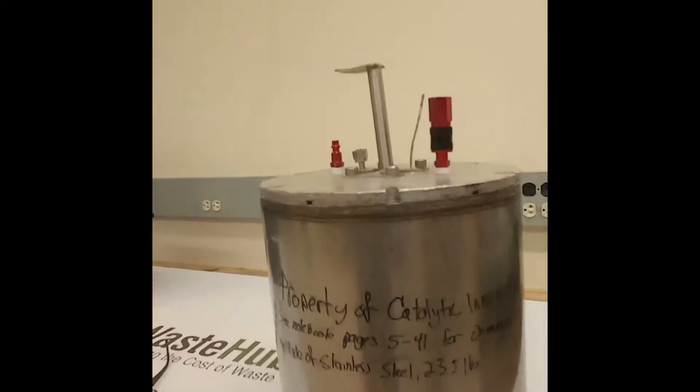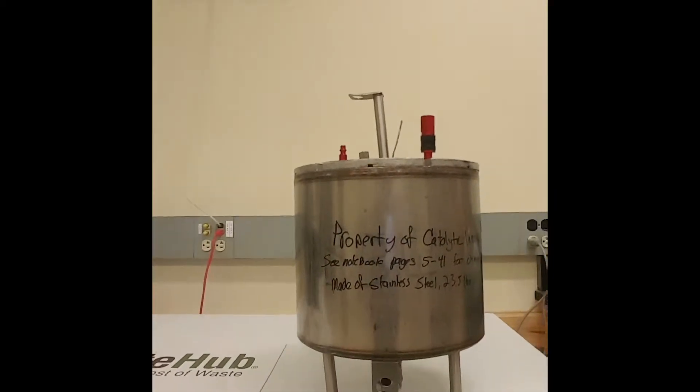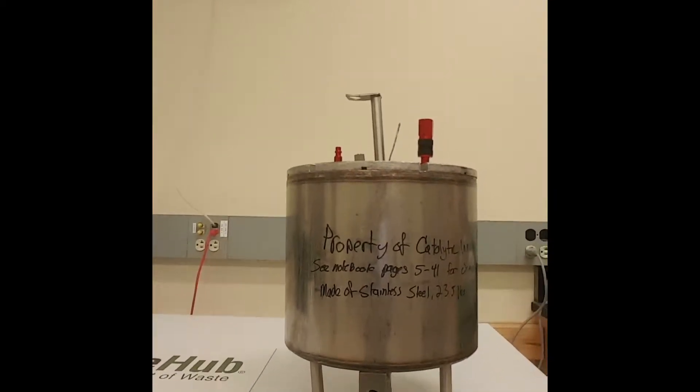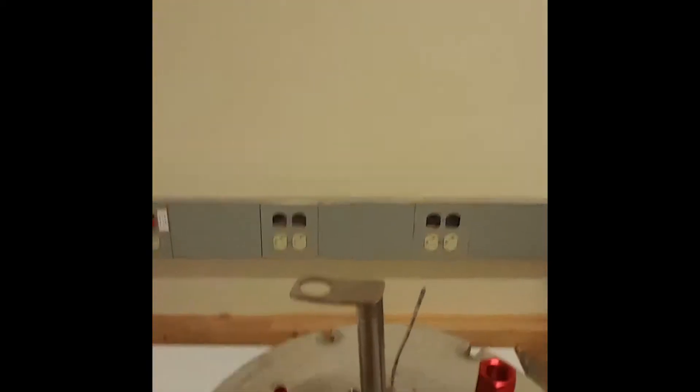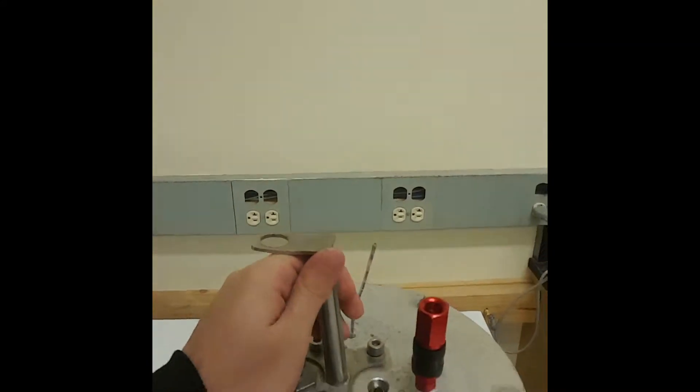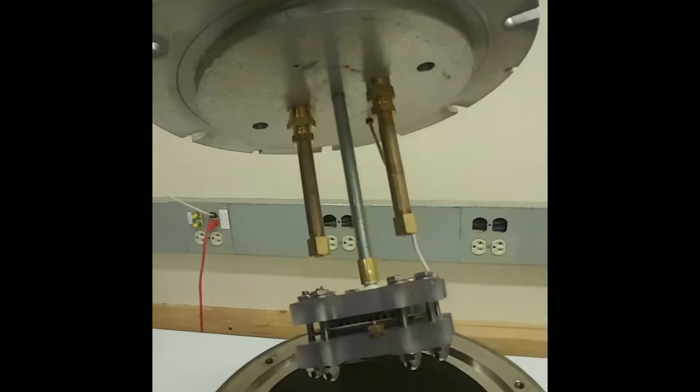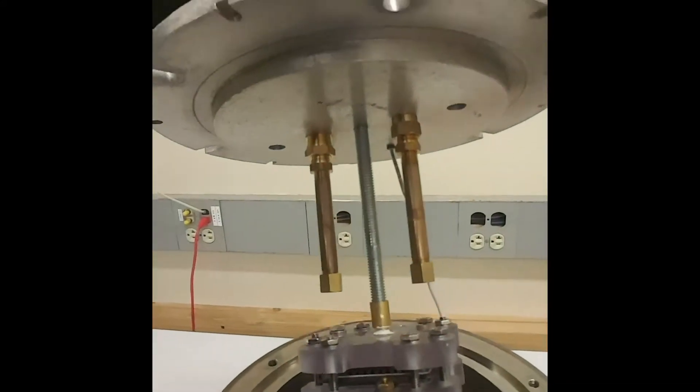So this hunk of stainless steel that you can see right here is my team's carbon dioxide converter, and what it does is it takes CO2 and water in these ports and turns that into ethanol at this little reactor right here.